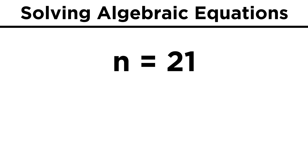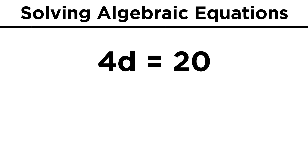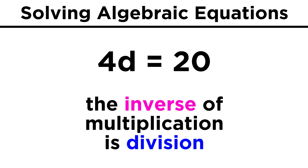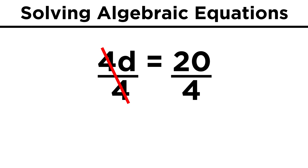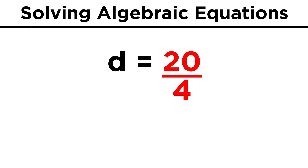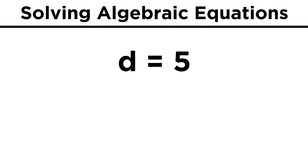This works the same way for multiplication and division. Given the equation four d equals twenty, we can see that the variable is being multiplied by four. The inverse of multiplication is division, so we have to divide both sides by four. On the left, the fours cancel, and on the right, twenty divided by four is five, so d equals five.